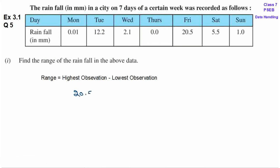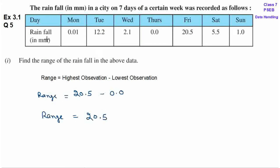So, 20.5 minus lowest observation check करो. यहां पर lowest observation है 0.0. So, minus 0.0. Range is equal to 20.5 minus 0.0, यह आ जाएगा 20.5. यहां पर rain millimeters में mentioned है, so range is equal to 20.5 millimeters.